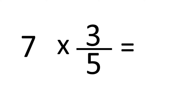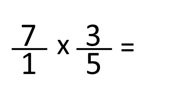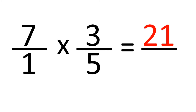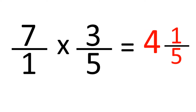Sometimes kids can get confused with a question like 7 times 3 fifths. The key is to remember that 7 can also be written as 7 over 1, and all of a sudden it looks much easier. 7 times 3 is 21, 1 times 5 is 5, giving 21 over 5. Since 5 goes into 21 four times with 1 left over, it's 4 and a fifth.